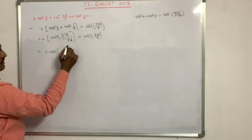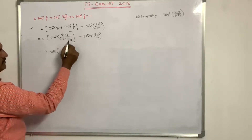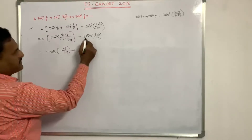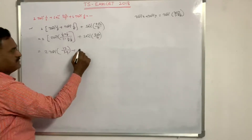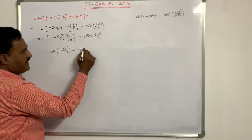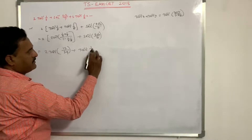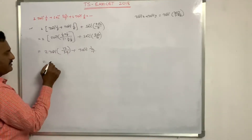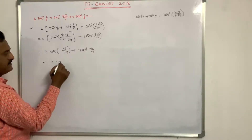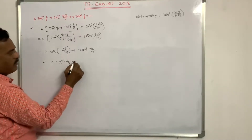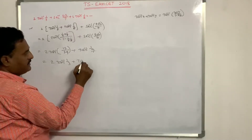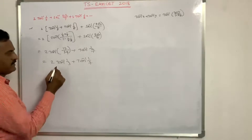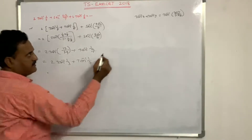That gives 13/39, which simplifies (cancel 13) to 1/3. So the expression becomes 2tan⁻¹(1/3) + 2tan⁻¹(5√2/7), where 5√2/7 is written as tan⁻¹(1/7). That is 2tan⁻¹(1/3) + tan⁻¹(1/7).